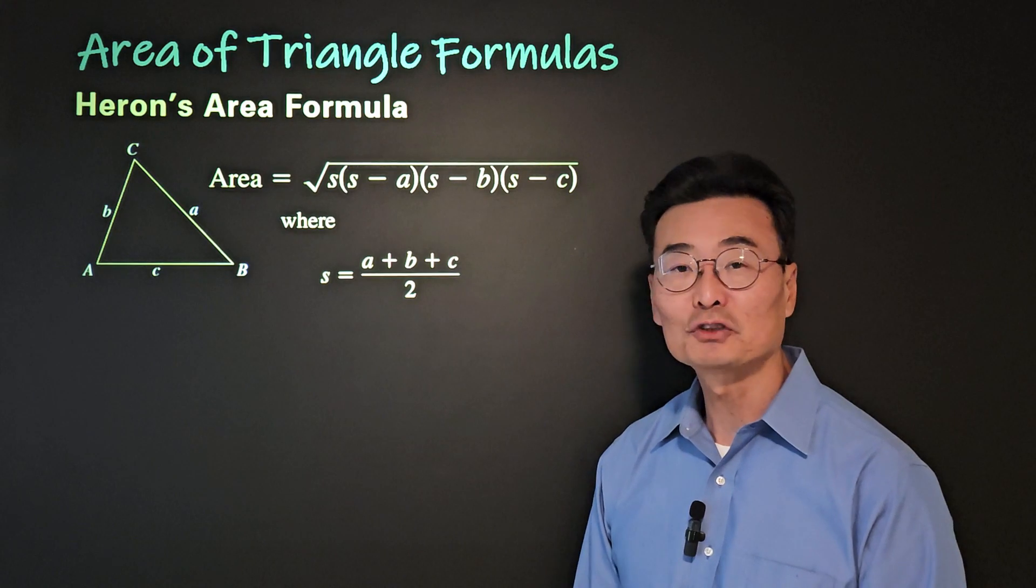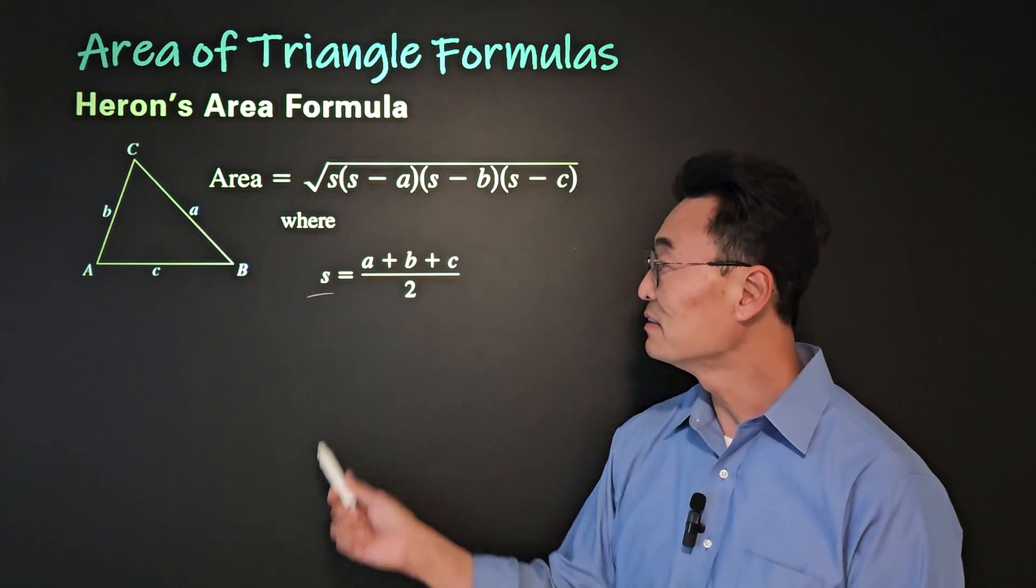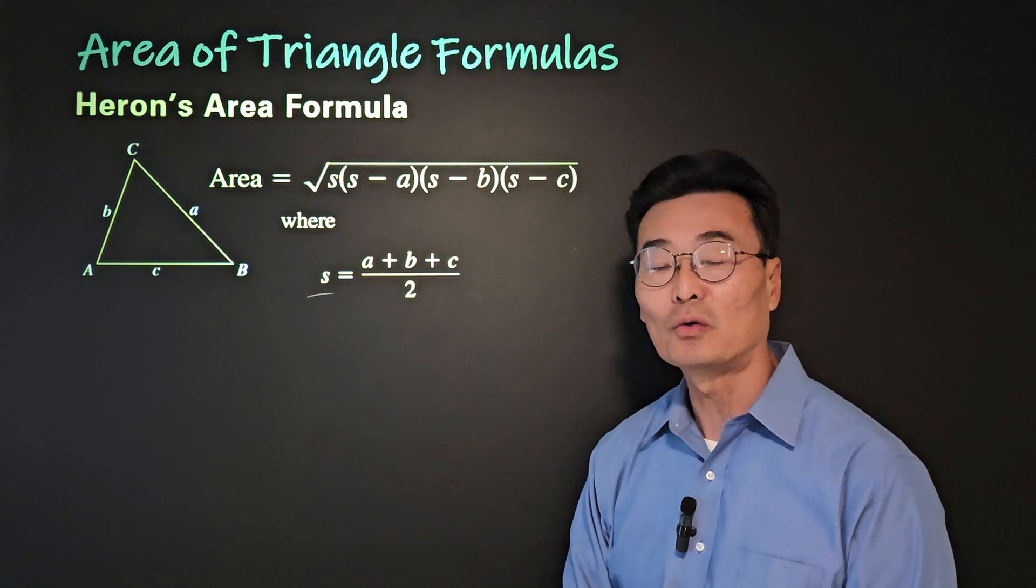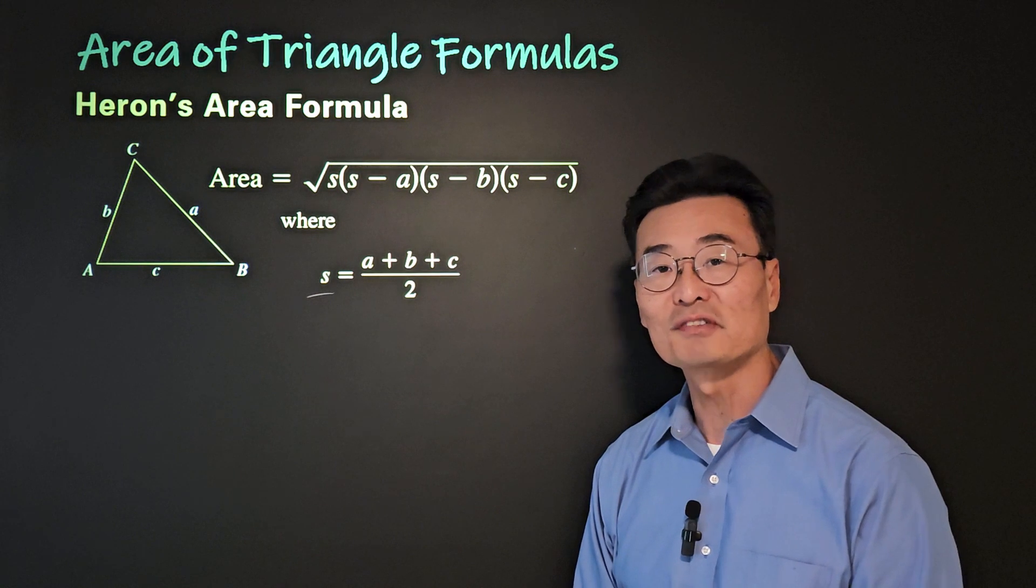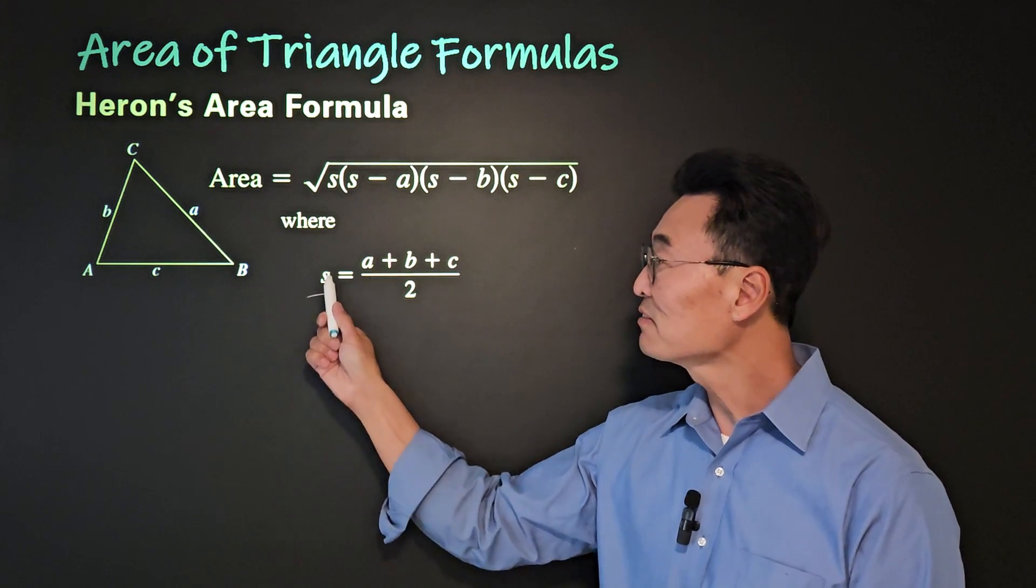To find the area of a triangle using Heron's formula, first thing you need to do is find the value of s, where s is a plus b plus c, or take the sum of the three sides of a triangle, and then divide it by 2.